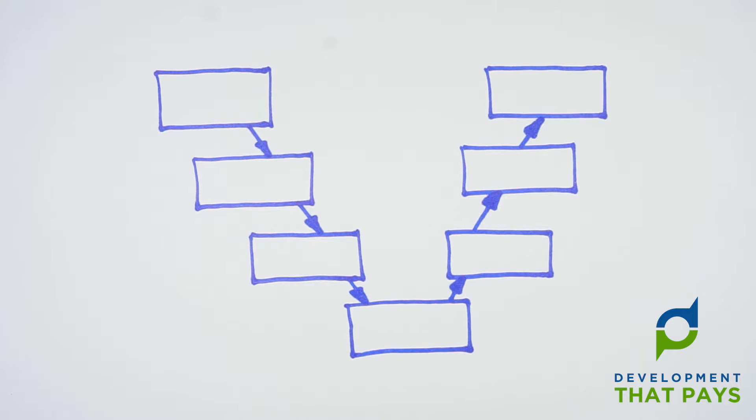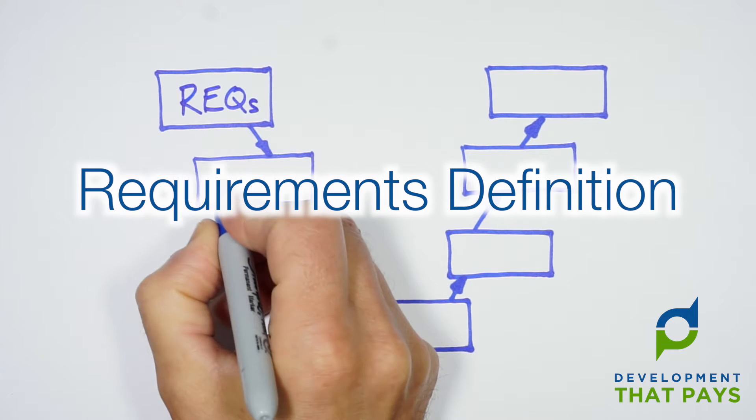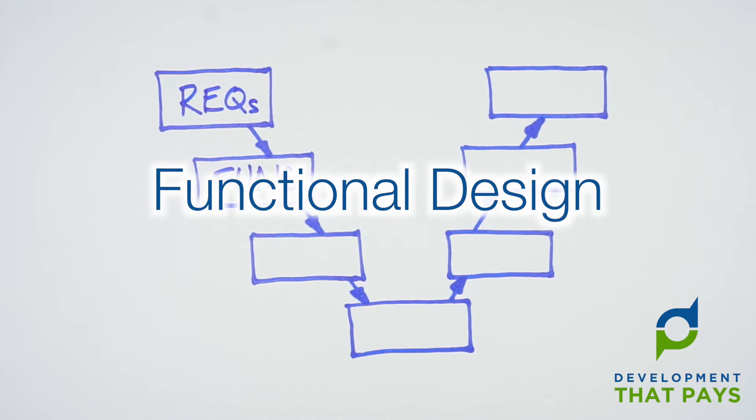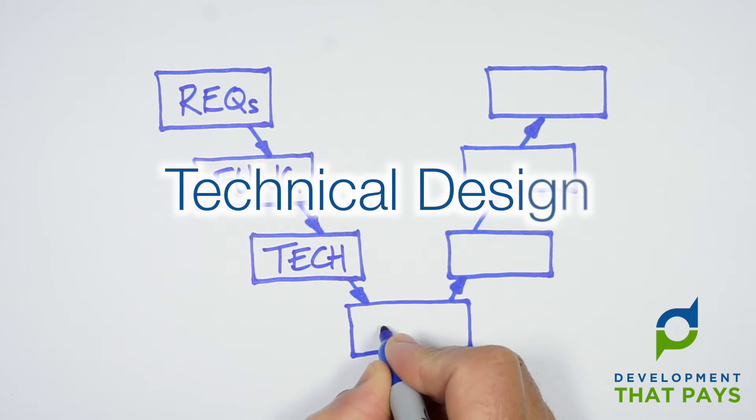Let's start with a quick review of the V-Model. Start at the top left with requirements definition. Then move into functional design. Then into technical design. Finally we're ready to do some coding.